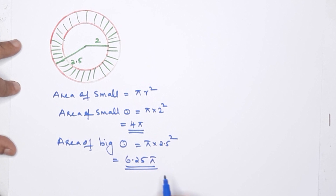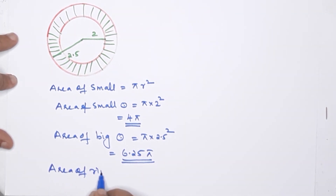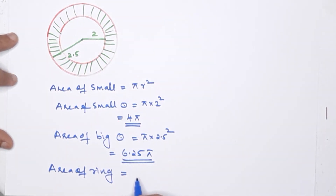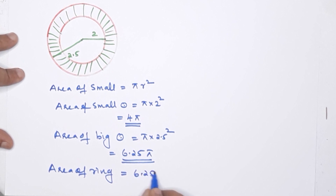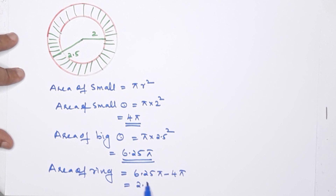Now the difference: area of ring = area of big circle minus area of small circle = 6.25π − 4π = 2.25π. This is the answer. Clear — simple question!